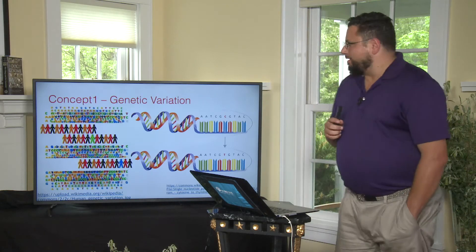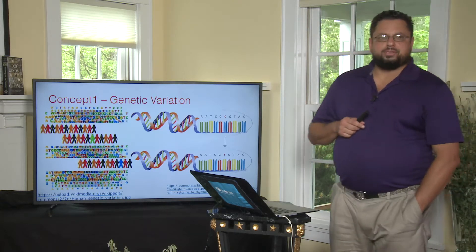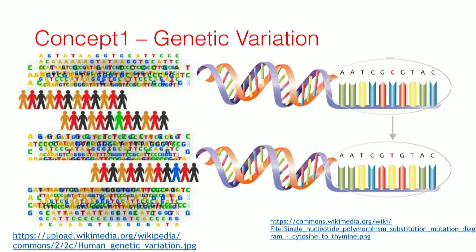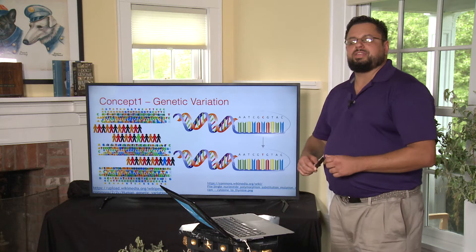The first genetic concept relevant to understanding dog domestication is genetic variation. You can have a large parental population, like wolves on the left, and within that population there may be a difference in a nucleotide at a particular position in the genome — one wolf might have a C and another might have a T.